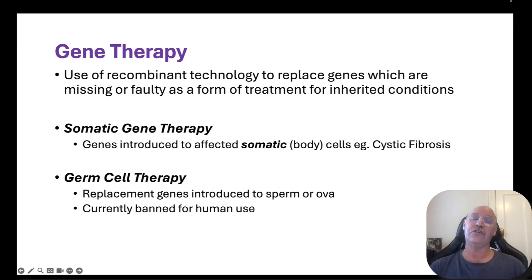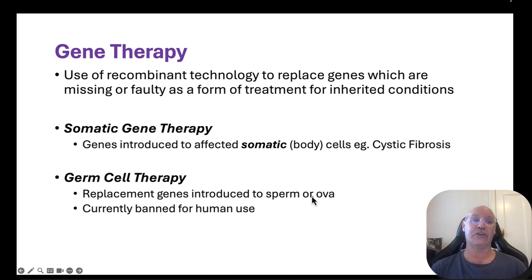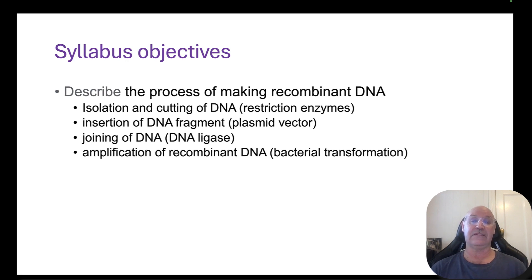Currently, somatic gene therapy is being used to treat the somatic or body cells in conditions like cystic fibrosis. There's also potential in the future for germ cell therapy — actually replacing the missing or faulty genes in the sperm or the ova. There are lots of issues and concerns with that, so it's currently banned for human use. That covers recombinant DNA technology and the syllabus objectives.